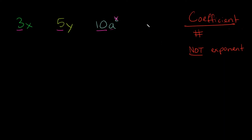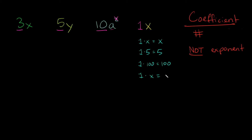What if I just had the letter x? What would my coefficient be? It would actually be 1. There's always a hidden 1 next to any variable that's just by itself. Why? Because x and 1x are the same thing as 1 times x, which simply equals x — just like 1 times 5 is just 5, and 1 times 100 is just 100. Make sure you understand this is not 0; it is 1. If we put 0 times x, well anything times 0 is just 0, which is obviously not x.